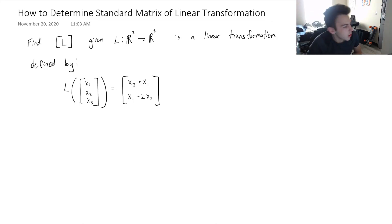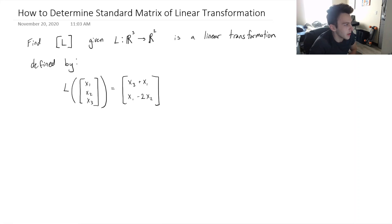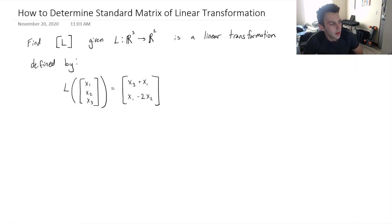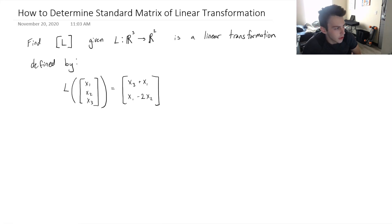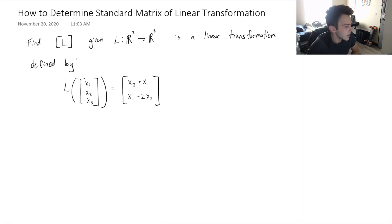In this video we're going to go over how to determine the standard matrix of a linear transformation. As a reminder from my last video, a standard matrix is what describes our linear transformation, where each of the columns are where our standard basis vectors lie. First, let's take a look at this example: find the standard matrix of L, given that L is a linear transformation that maps vectors in R3 into R2, as defined below.